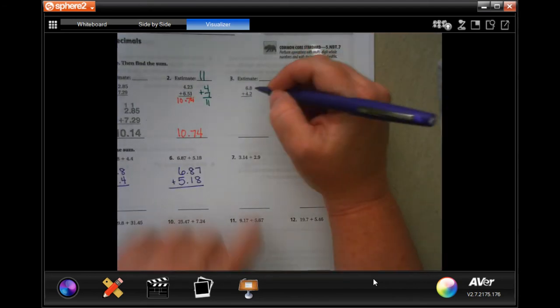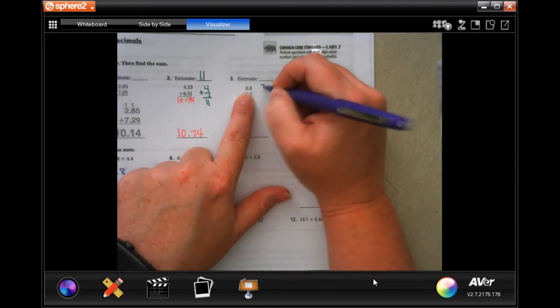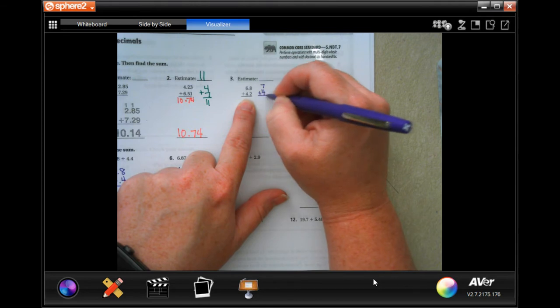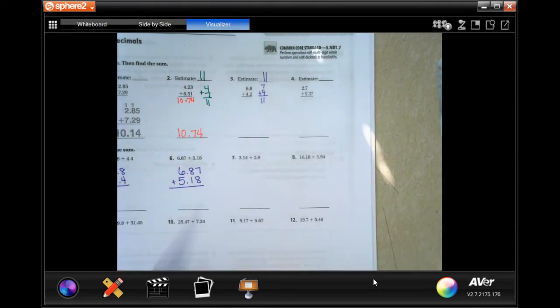All right, one more. 6.8 is going to round to 7, 4.2 is going to round to 4. So again, we're going to have 7 plus 4 is 11. Our estimate's 11.